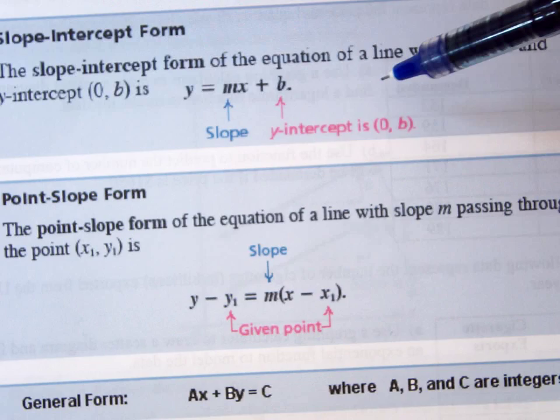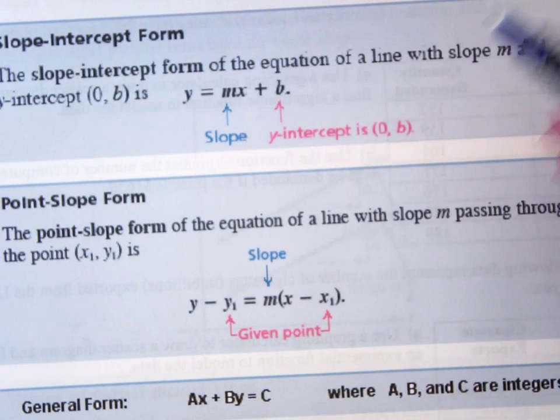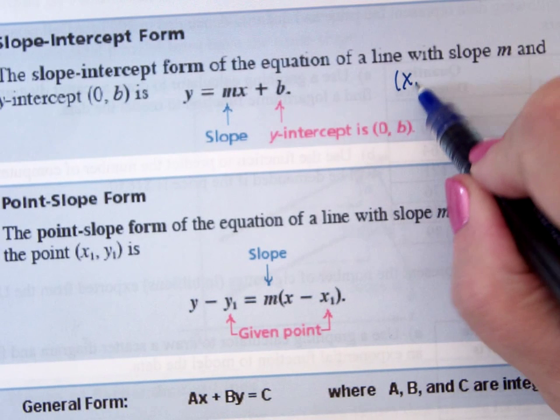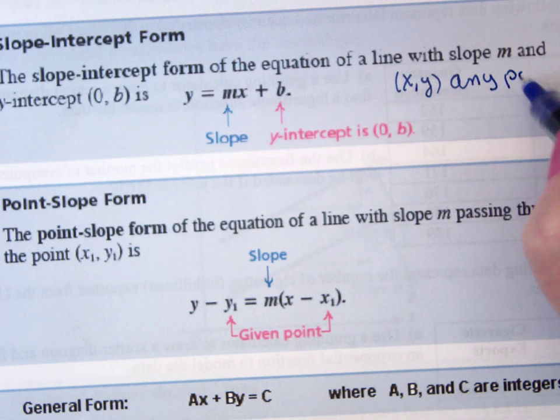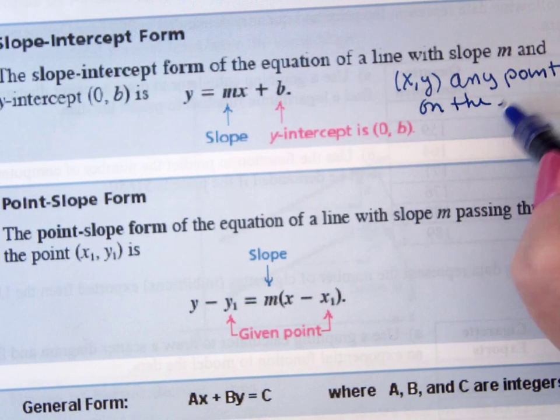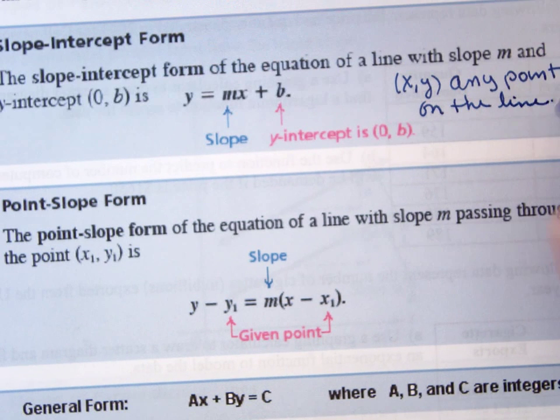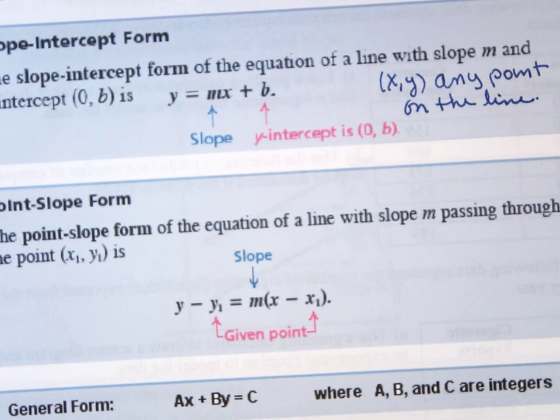Because that's when x is zero - x is zero, that goes away, y is b - and then x comma y is any point on the line. So x comma y is any point on the line.